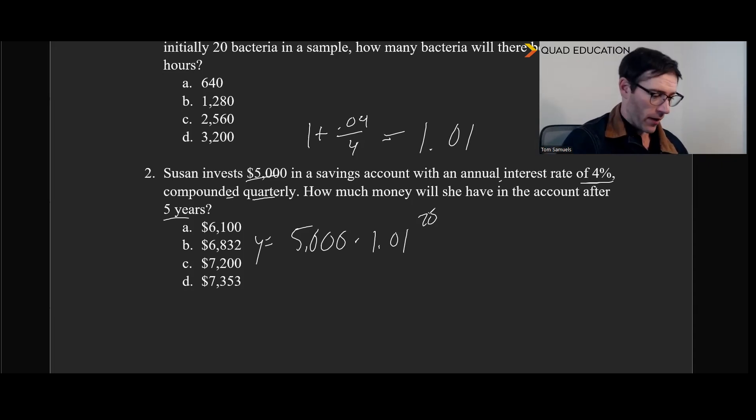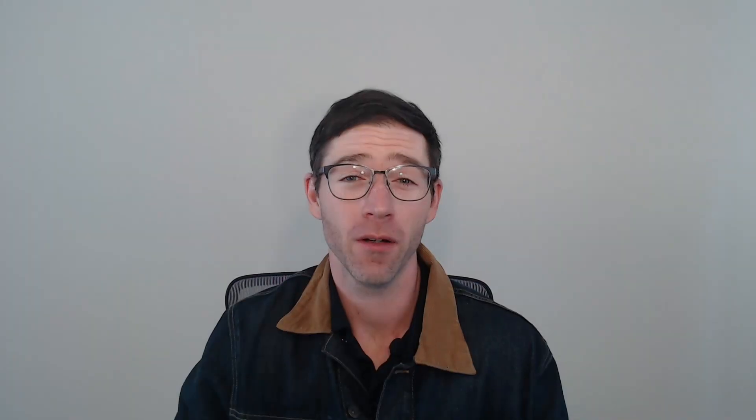And just pulling out my calculator here, 1.01 to the 20 times 5,000 is around $6,100. And yes, this is absolutely going to be a calculator question. So either an ACT question or an SAT calculator question. So pretty straightforward.